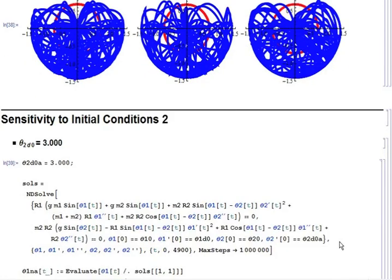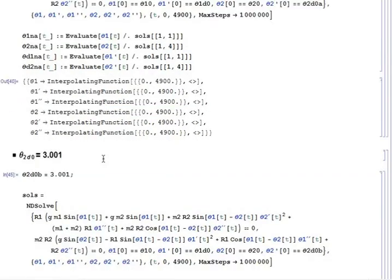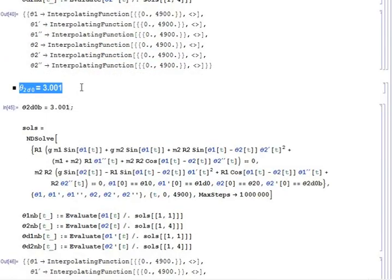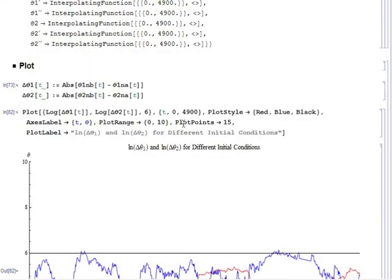So now to actually prove that the double pendulum is a chaotic system, we're going to take theta 2 dot equal to 3, and also equal to 3.001, and then take the difference between the angles of mass 1 in each of those and the difference between the angles of mass 2 in each of those. So that's what delta theta 1 and delta theta 2 are.